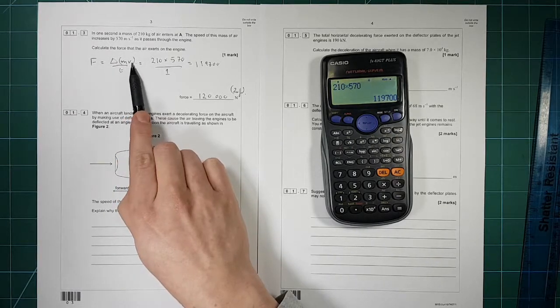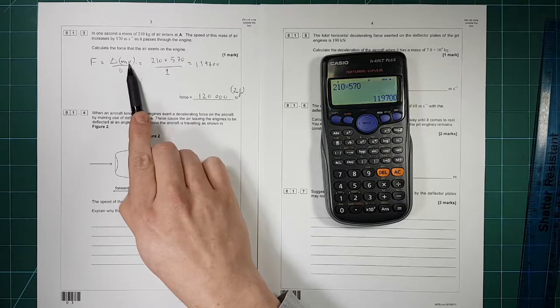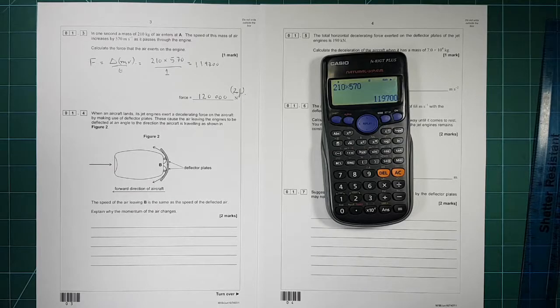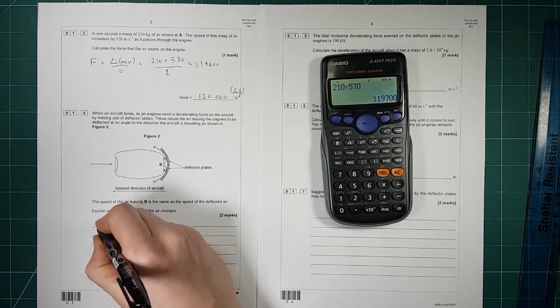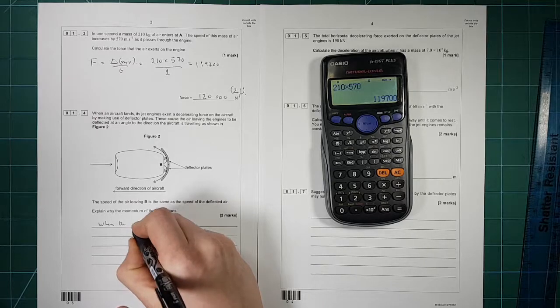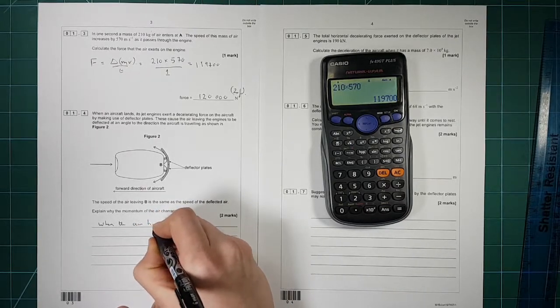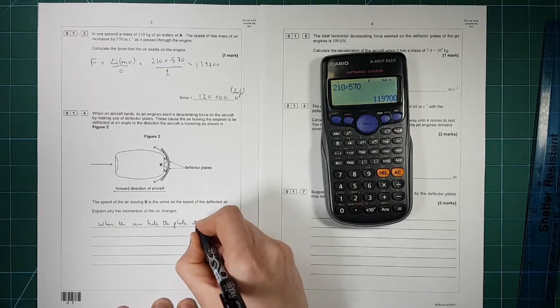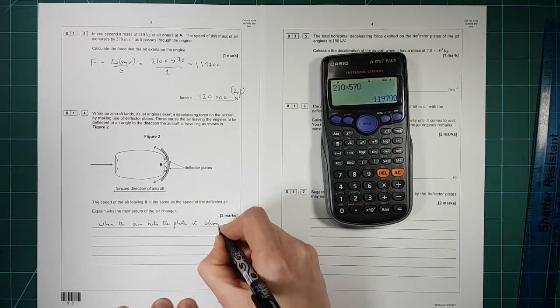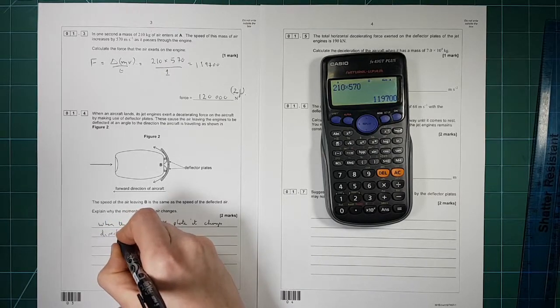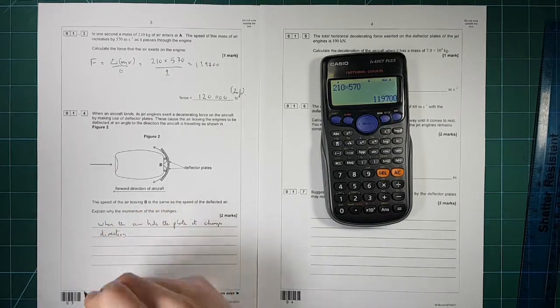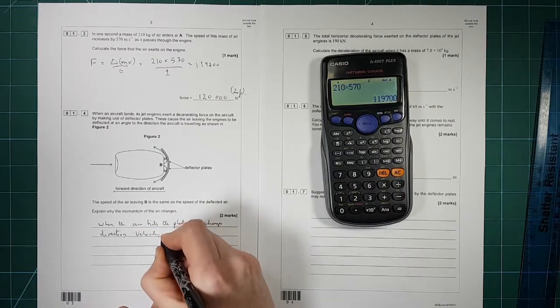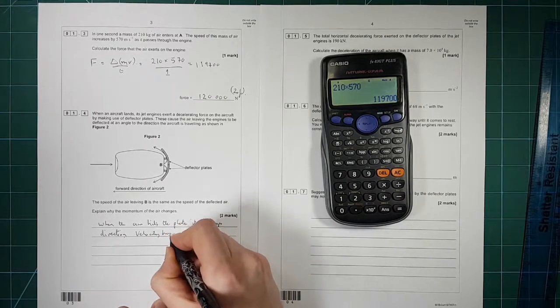Well the momentum of the air here is mass times by velocity. It's not mass times by speed. And velocity is a vector and it takes into account the direction of the air. So when the air hits the plate it changes direction.